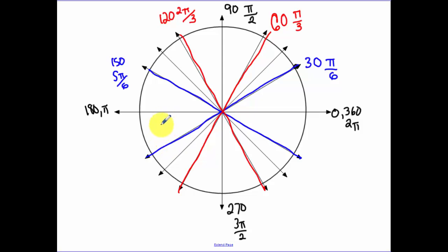This reference angle down here would be 30. So 180 plus 30 is 210, 210 is 7 times 30. So that's 7 pi over 6. This one over here, reference angle is 30. So this is 330. That's 11 times 30. So that's 11 pi over 6.